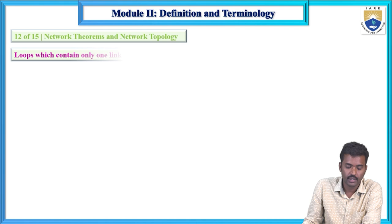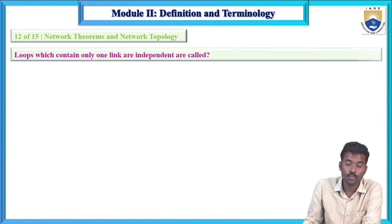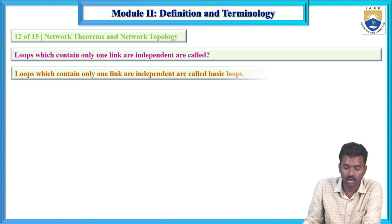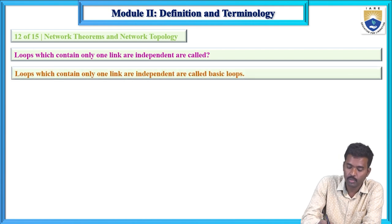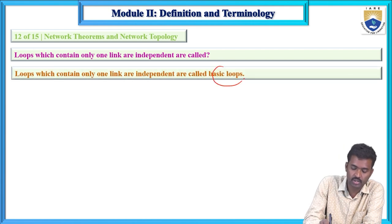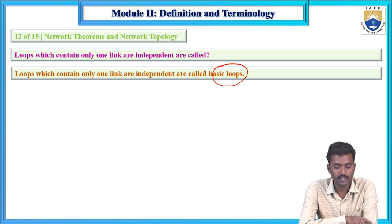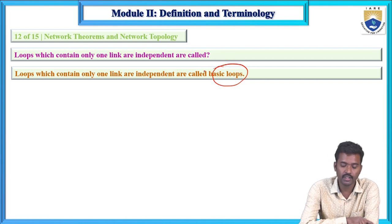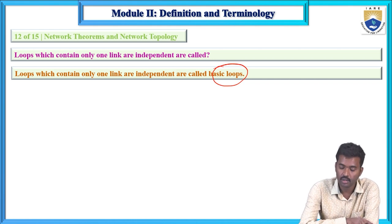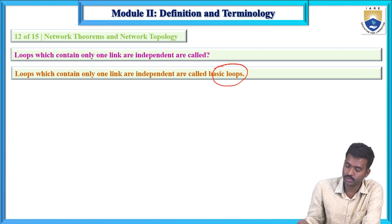Twelfth question: loops which contain only one link are called basic loops. Loops which contain only one link are dependent on or known as basic loops.